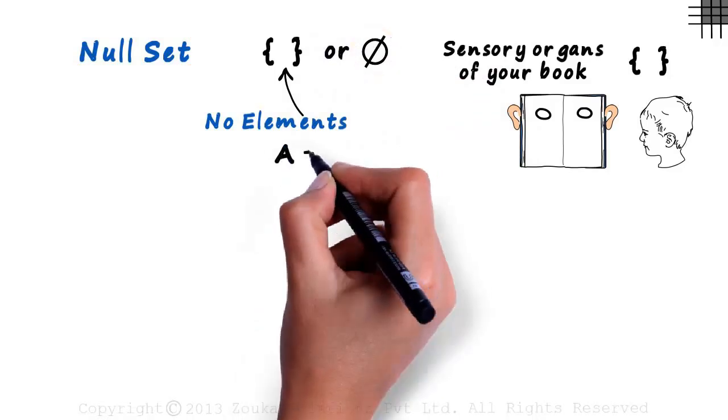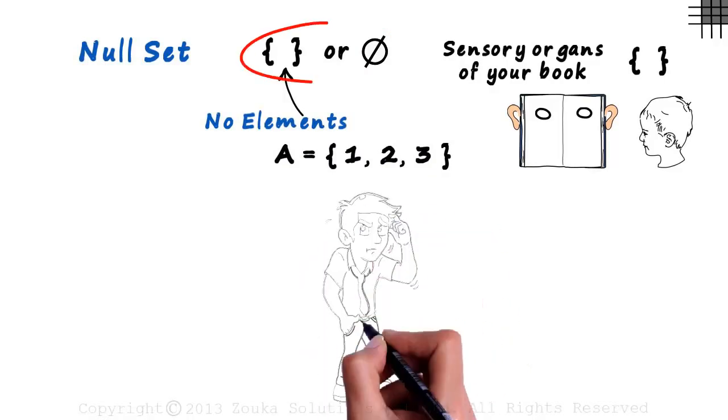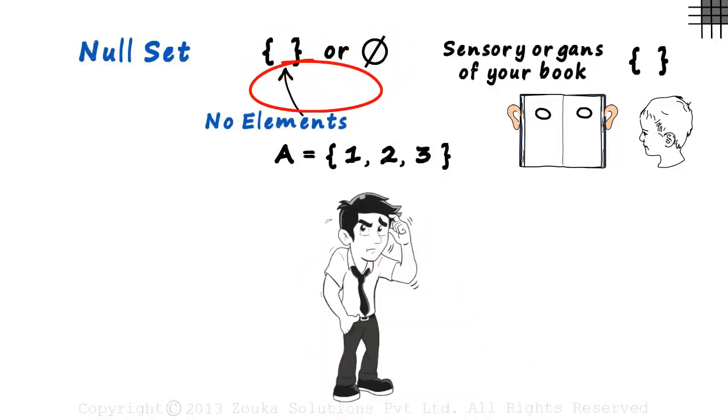Consider the set A with the first three natural numbers inside it. Now think about it. Is the null set a subset of the set A? Yes, the null set is a subset of every set.